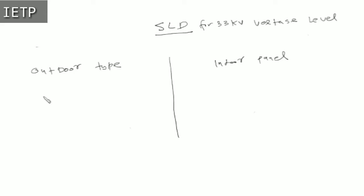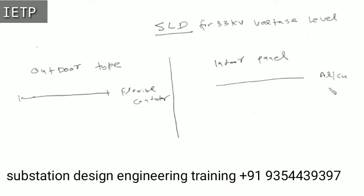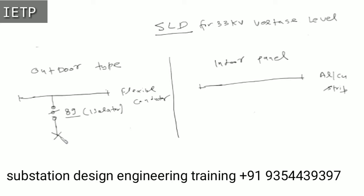We draw the bus bar here — for the outdoor switchyard this will be a flexible conductor (aluminium or copper). For the outdoor type, the first equipment after the bus bar will be an isolator, ANSI code 89. After this isolator, the circuit breaker comes, with ANSI code 52 for the VCB. After the circuit breaker, a CT (current transformer) will come.